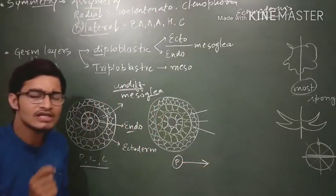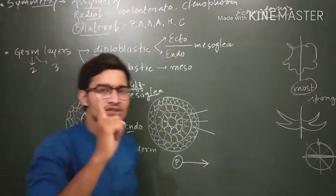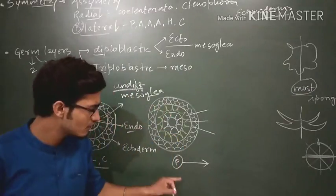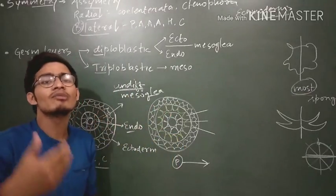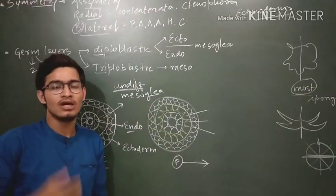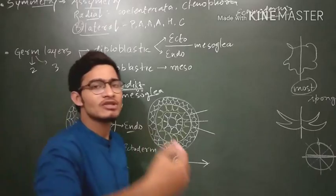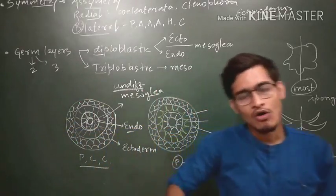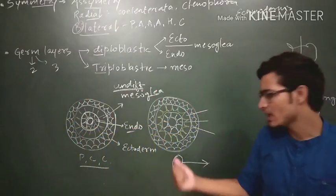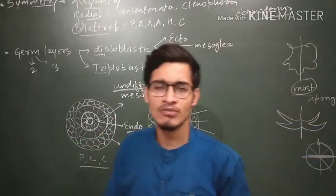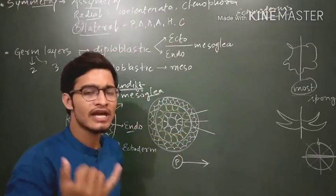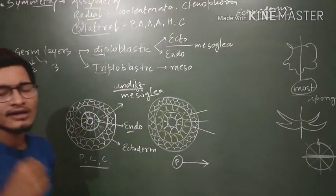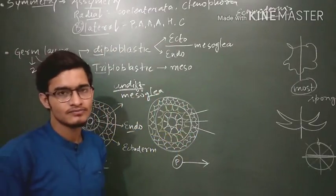So who is the first triploblastic animal by phylum? Platyhelminthes. From Platyhelminthes — the flat worms — onwards, all animals have three different kinds of germ layers: ectoderm, mesoderm, and endoderm. As the name indicates, endoderm will be present on the inside and ectoderm will be present on the outside.